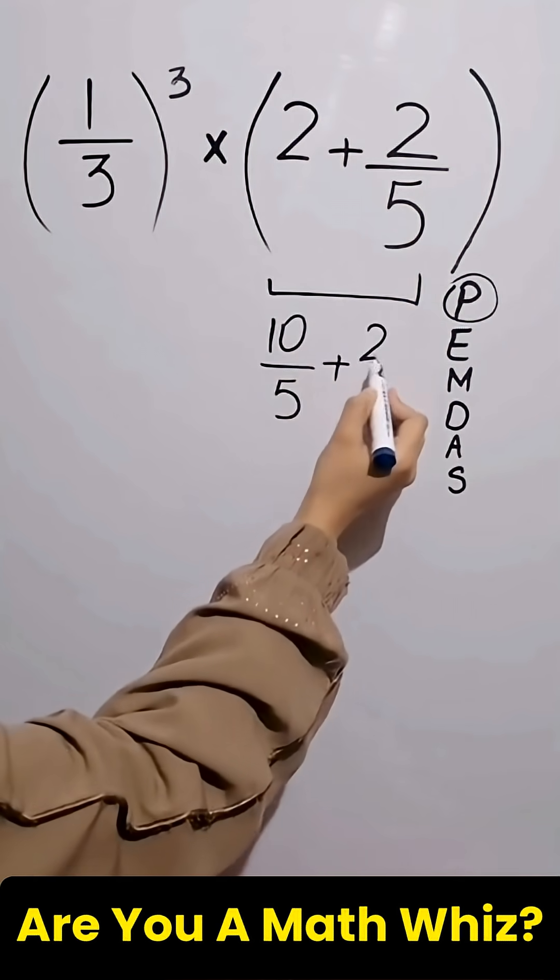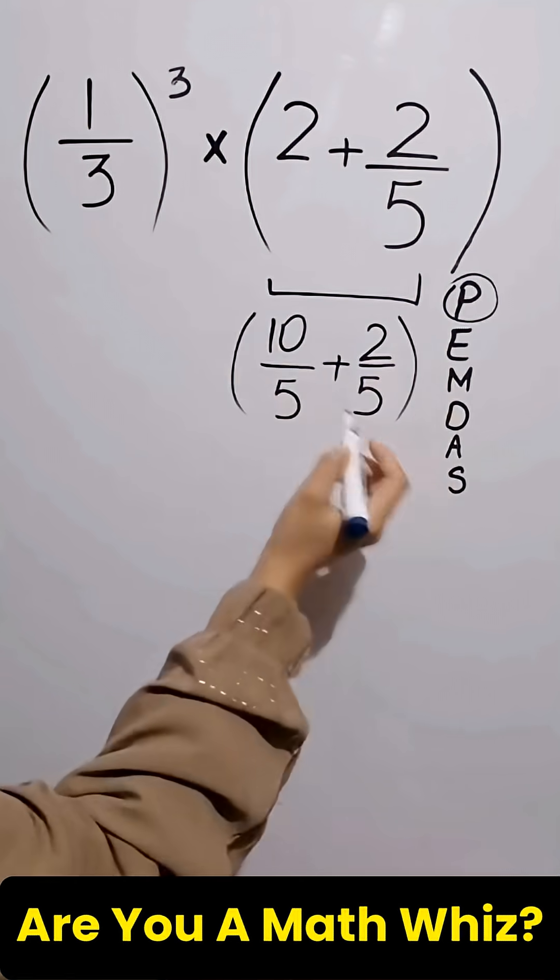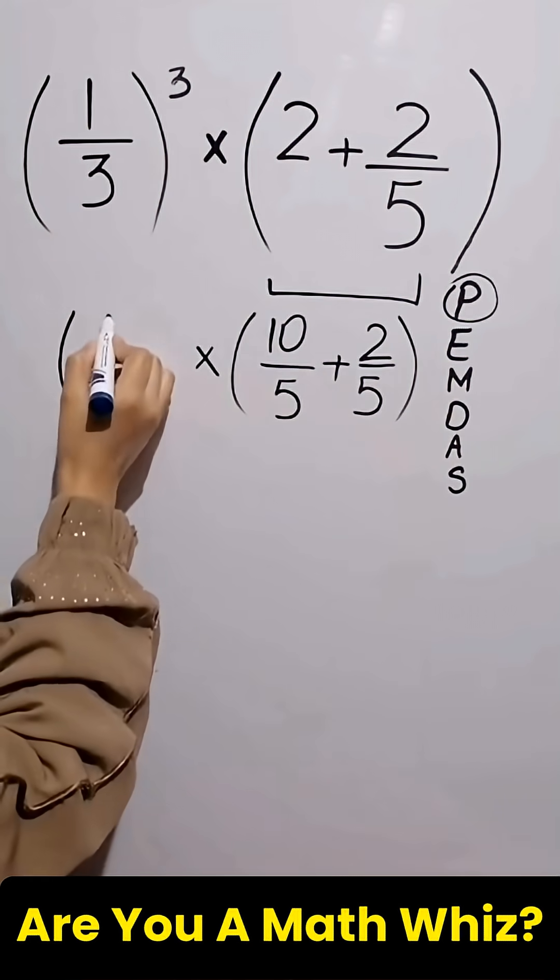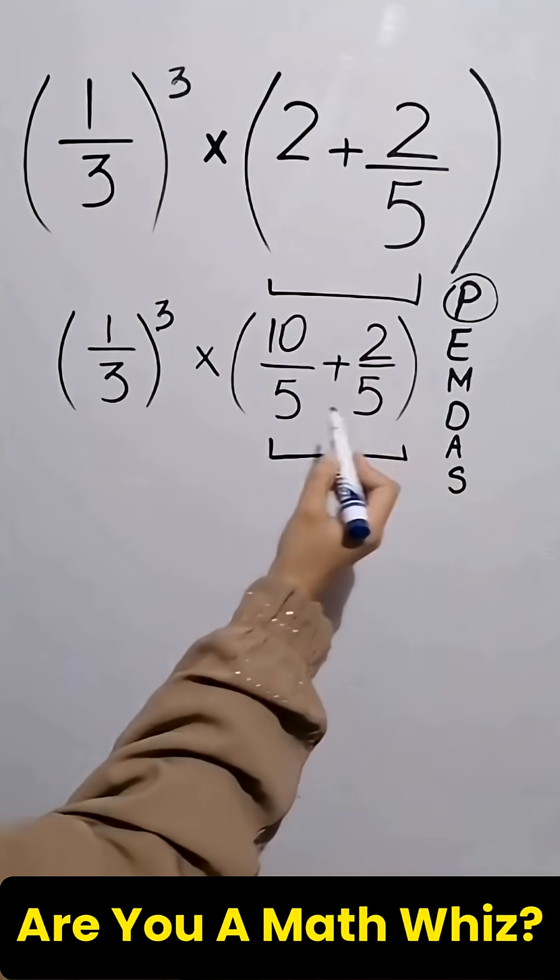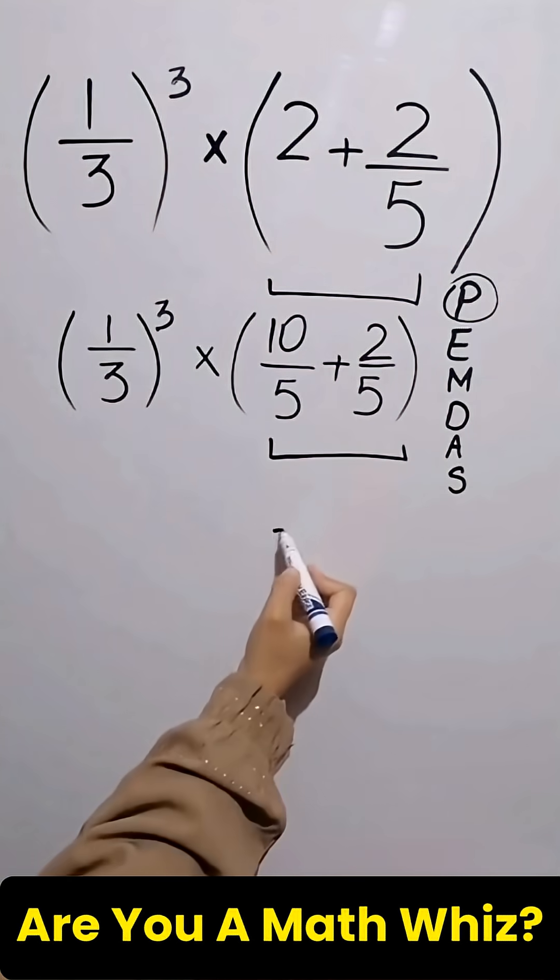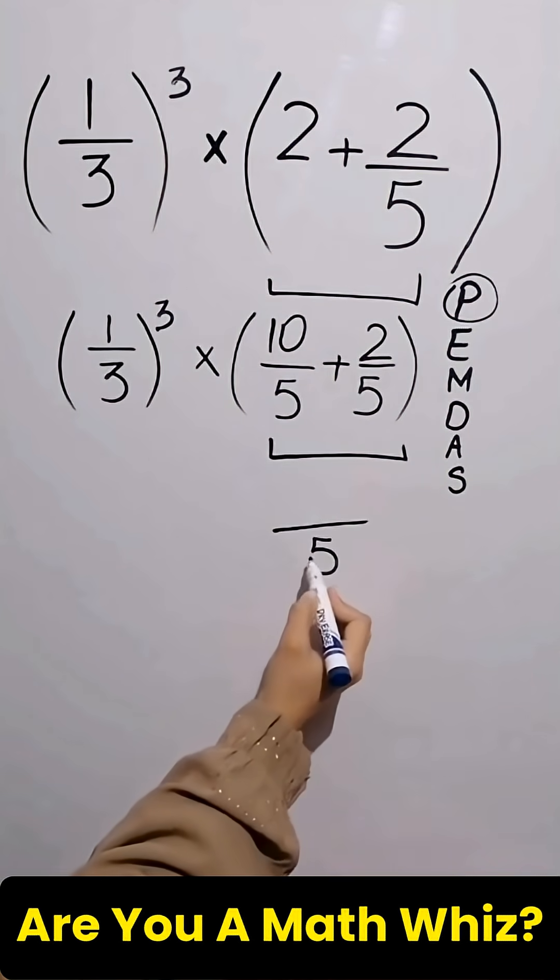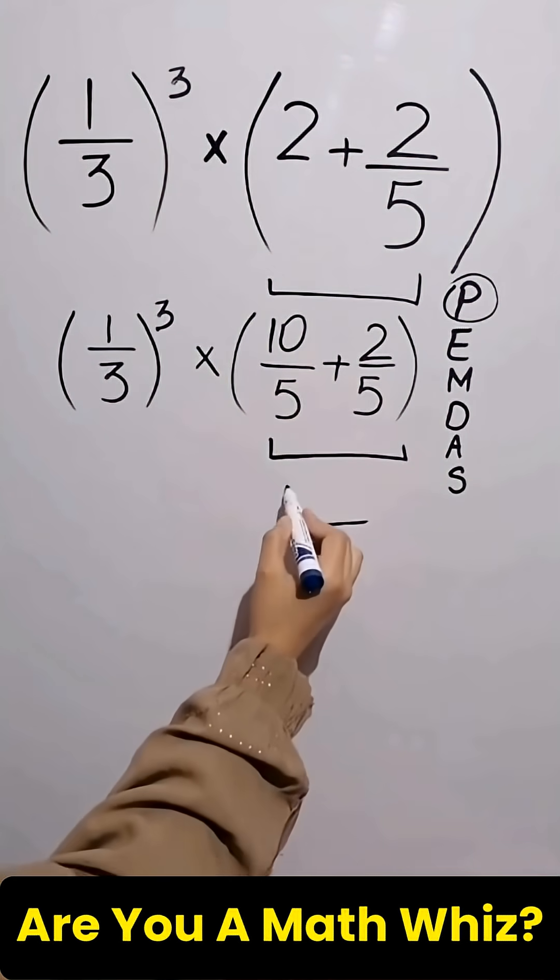Bring down remaining values as it is. Again we simplify the parenthesis as both the denominators are common. So we'll write 5 only once and add both numerators 10 plus 2.